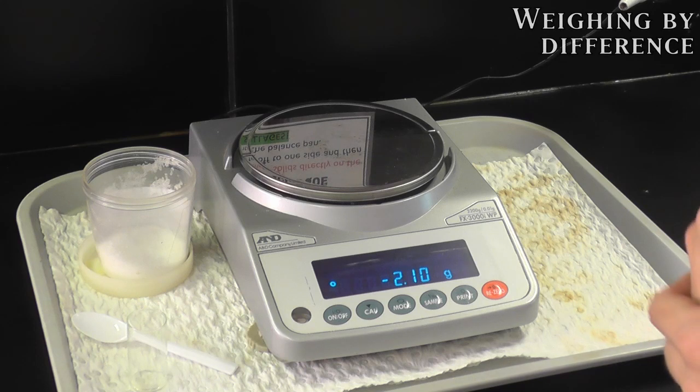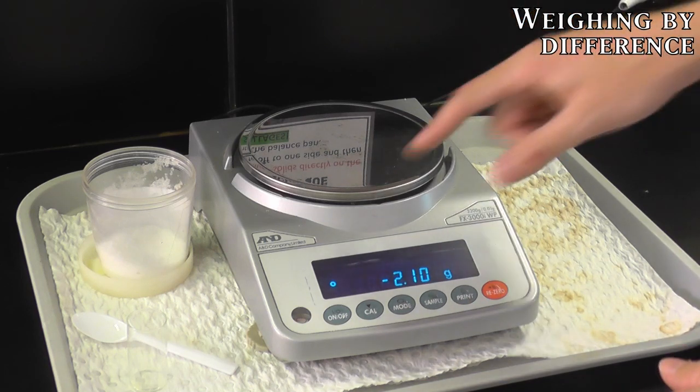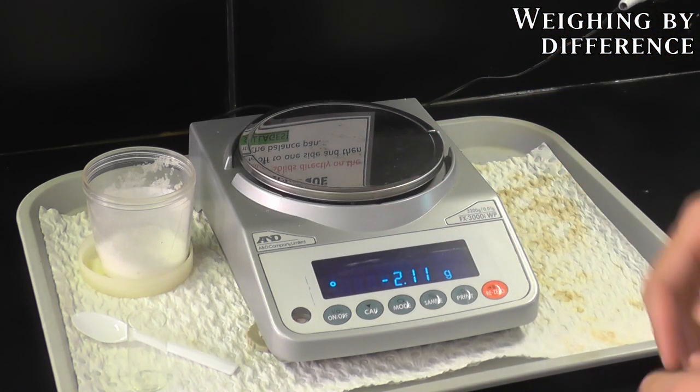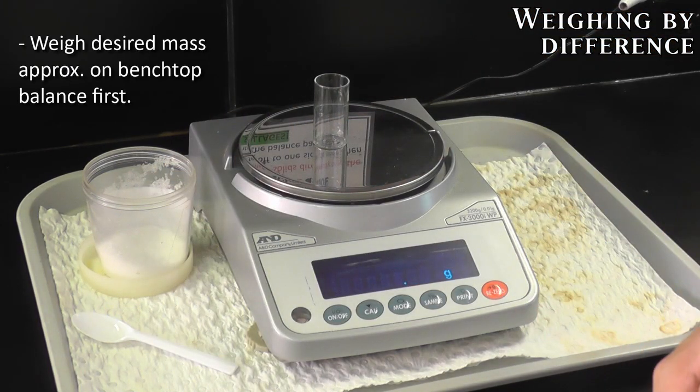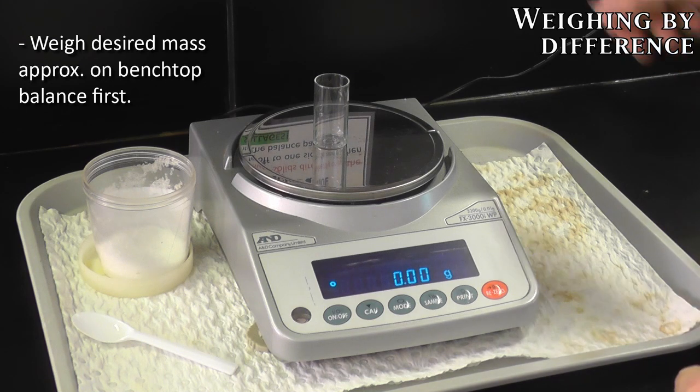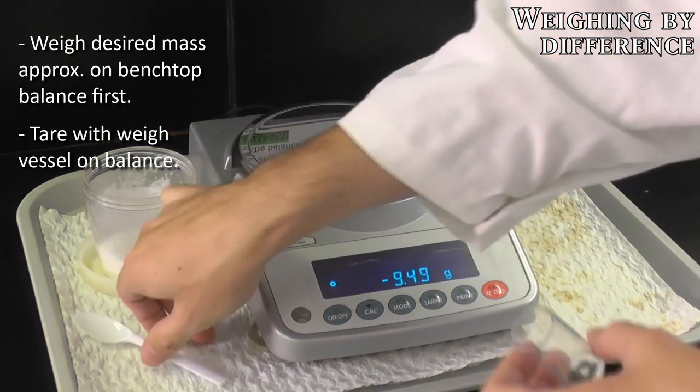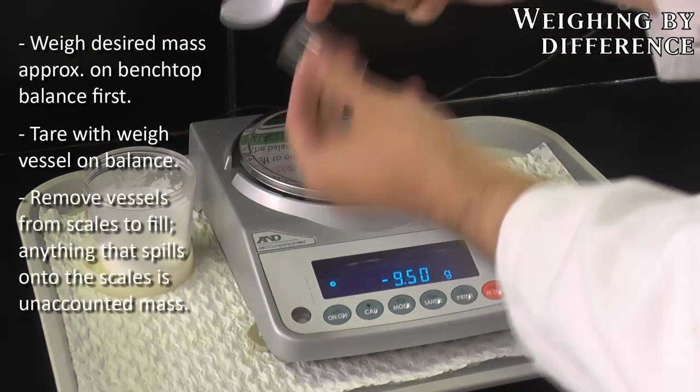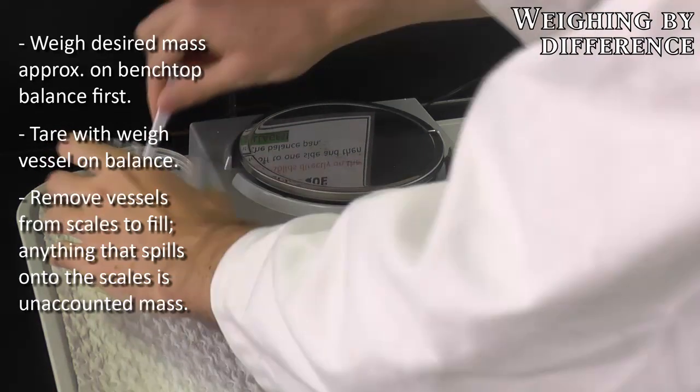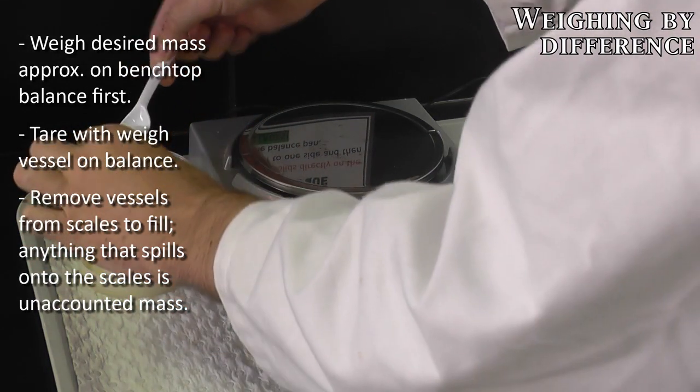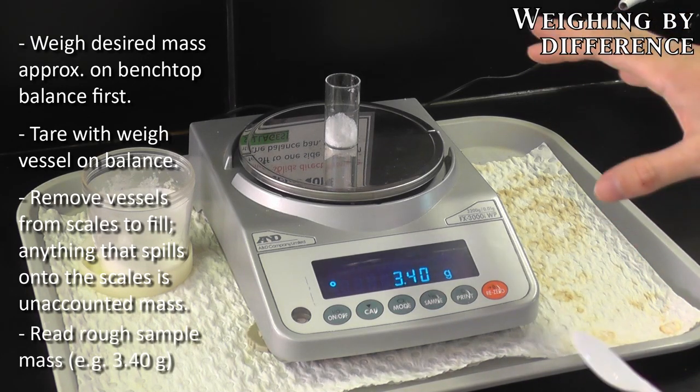An important skill in first-year labs is weighing by difference. The first step is to come and get a rough measurement on something like this bench top balance. You may notice that the reading is not zeroed initially. So what we want to do is grab our container, I'm using a soda glass vial, stick it on the top and hit re-zero, or tare, depending on your scale. That tells the scale that there's essentially nothing on the balance, and anything we add into our vessel is going to be the mass that it measures. It's very important to take these vessels off of the scale, because if you spill anything directly onto it, that is mass that's not accounted for within your container. So I've got about 3.4 grams here, roughly.